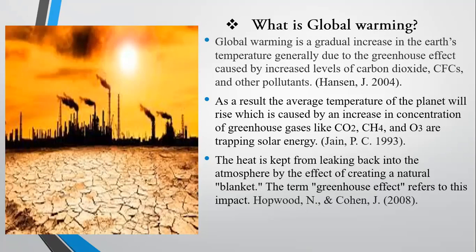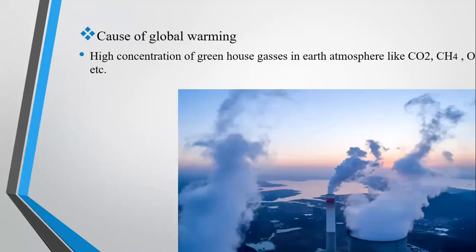In their normal condition, greenhouse effects are very important and help to keep the balance of temperature — maintaining minimum and maximum levels. But when their concentration increases in the atmosphere due to emissions from different sources, it causes warming of the globe. High concentrations of greenhouse gases like carbon dioxide, CH4 or methane, and ozone (O3) are examples of these greenhouse gases that cause warming of our planet.